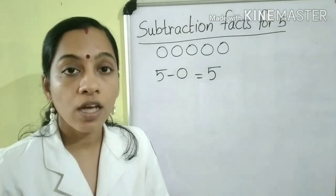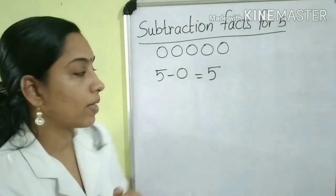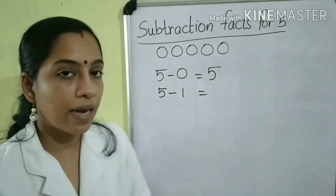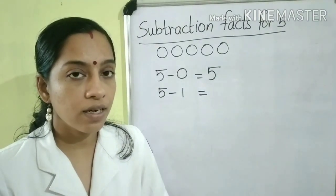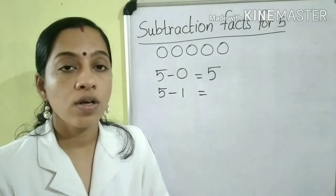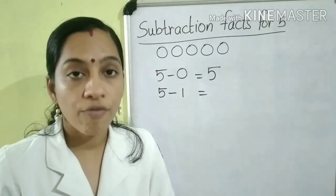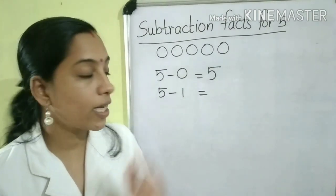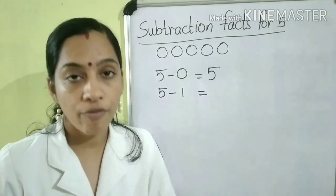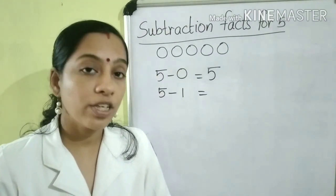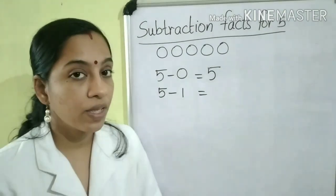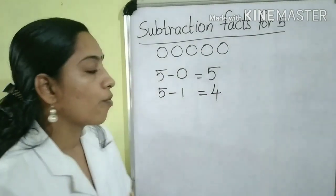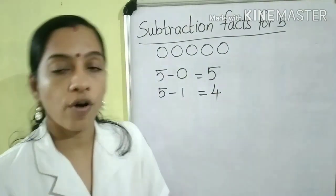Next, we have to subtract 1 from 5. That is, 5 minus 1 is equal to... Tell me children, what is the answer? We know: subtracting 1 from a number gives the number before. So, here you have to find the number before 5. Which number comes before 5? It is 4. So, 5 minus 1 is equal to 4.